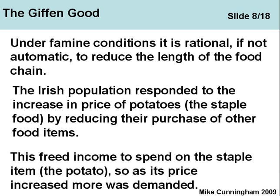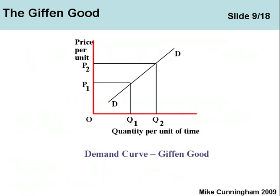This freed up income, and so as the price of potatoes increased, more was demanded. That is the Giffen Good demand curve — there are some technical aspects related to what's known as income and price effects, but the upshot is it's an upward-sloping demand curve: as the price rose, people tried to buy more of it. So that's the Giffen Good.